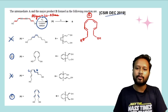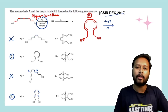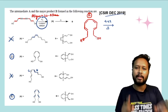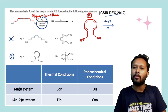Let's go further with the next part — you are going to heat this system. This particular system is a 4nπ system. When you heat a 4nπ system, according to the table, thermal conditions give conrotation. So this system is going to undergo conrotation.